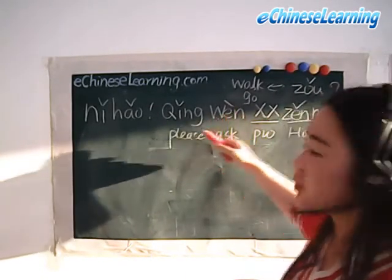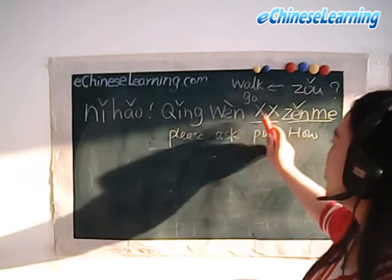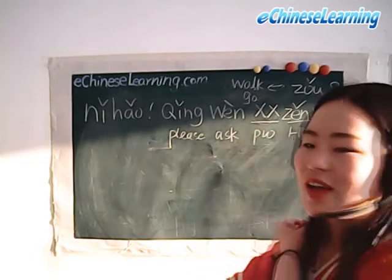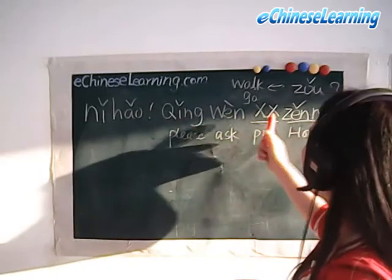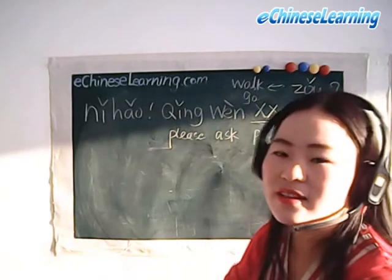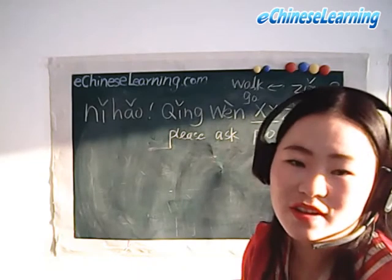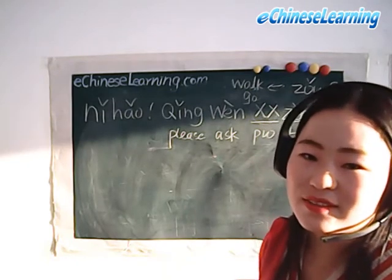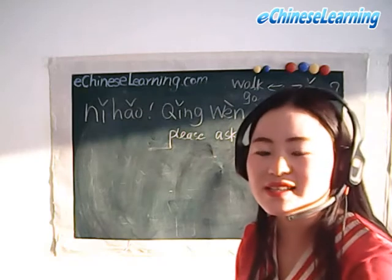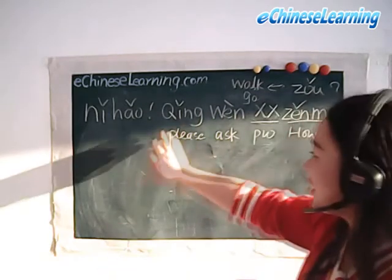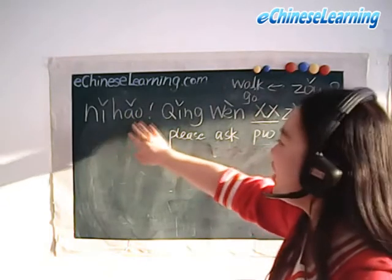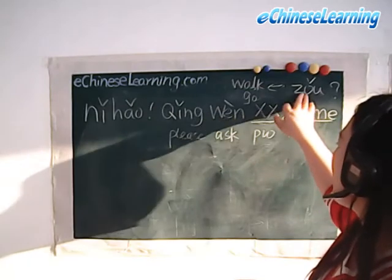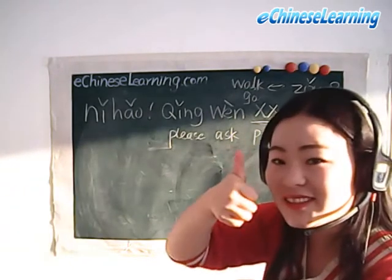First get familiar with the structure, then I'll teach you some Chinese place names, such as restaurant or hotel. So the pattern is: 'qing wen' — someplace — 'zen me zou,' meaning 'how do I get there' or 'how do I walk there.' This is a very basic sentence when you want to ask for directions. Try to read it again: 'qing wen' — some place — 'zen me zou.' Very good!